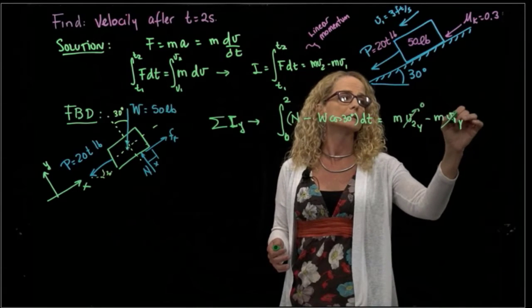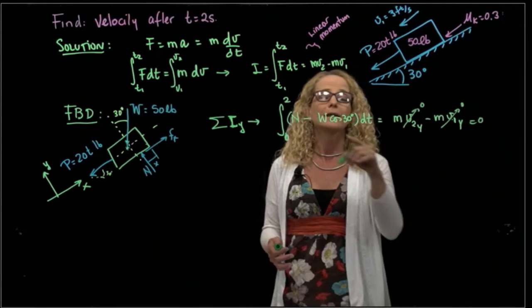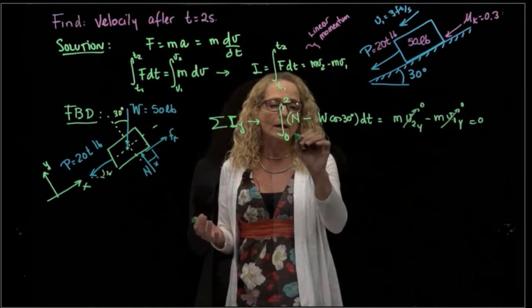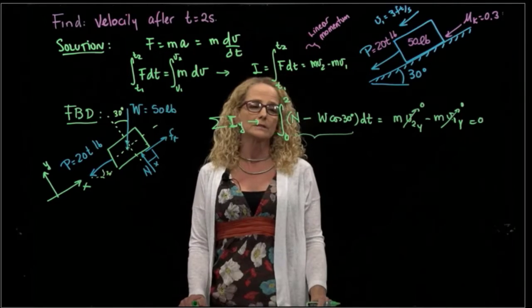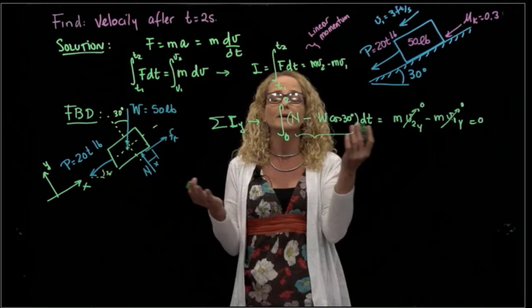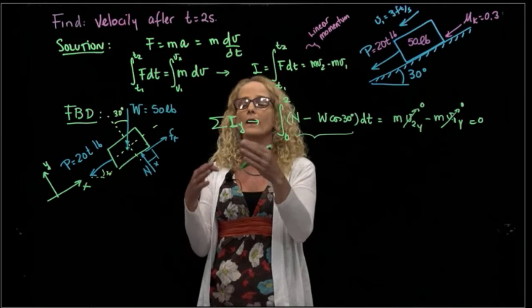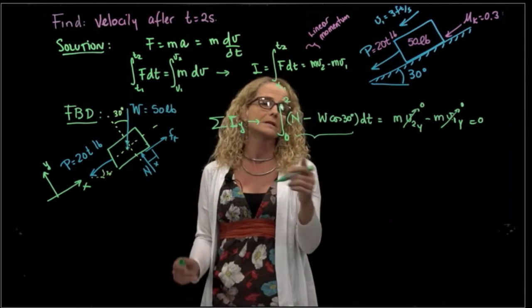It will be N minus weight cosine of 30 degrees times time, and that will be equals to my mass times velocity 2 in Y minus mass times velocity in 1, in position 1 in Y. But here, we notice that we don't have any velocities in Y direction. So this is 0, and this is 0. So that integral is 0. What I have inside the integral is 0.